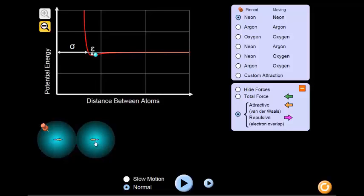As you can see, the orange arrow is larger than the pink arrows, which indicates that the attractive force is stronger.